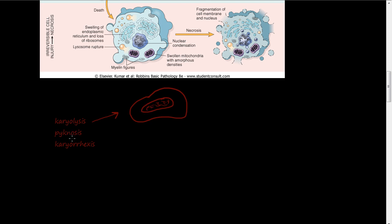Karyolysis, pycnosis, and karyorexis describe what happens to the nucleus as the cell undergoes necrosis. So karyolysis is this is a cell, and this is a nucleus and inside the nucleus there's chromatin or DNA. And when the cell undergoes karyolysis in a dying cell, in a necrotic cell.